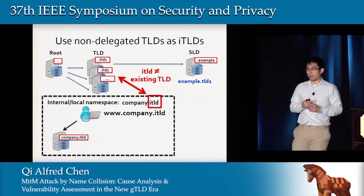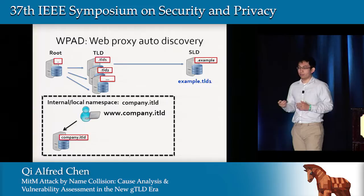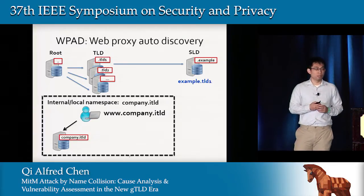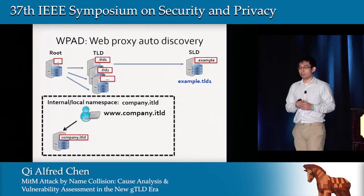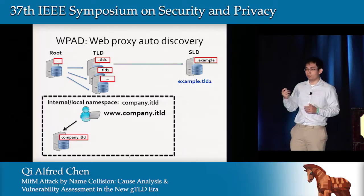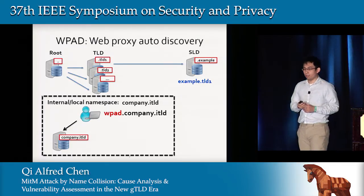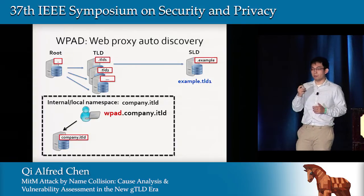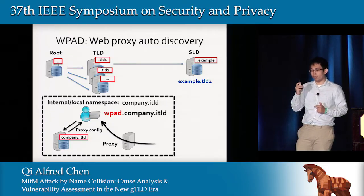Next, I'll introduce the WPAD query leakage problem. WPAD stands for Web Proxy Auto Discovery, a protocol designed for browsers or OSes to automatically configure their proxy. This is typically used in local networks — for example, in many companies where clients are restricted from talking to the public internet. The client issues a special query prepending 'WPAD' to the local domain name, and in the response gets information to configure its web proxy. Subsequently, all web traffic from that client is routed through the proxy.